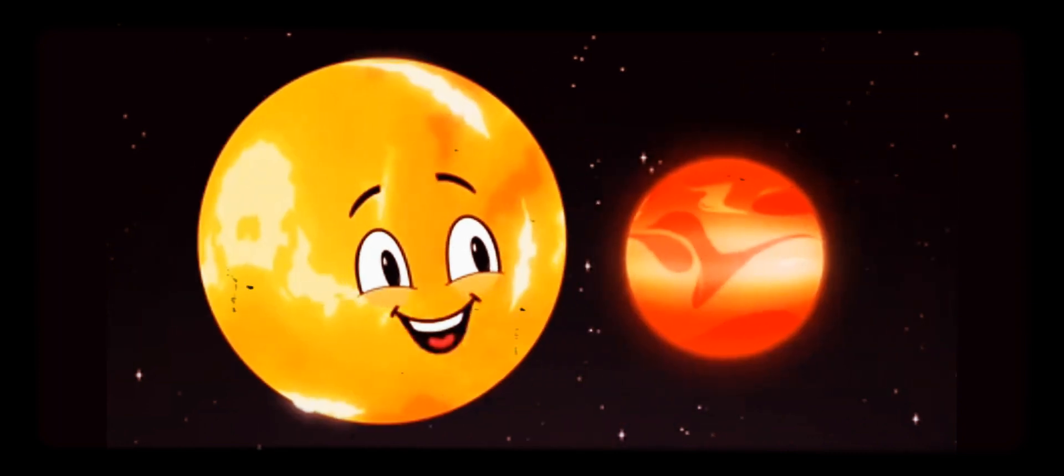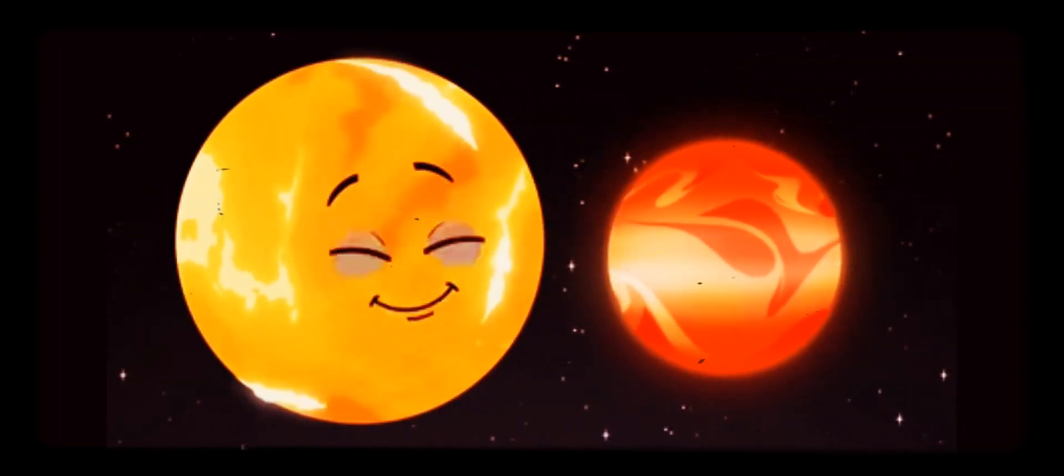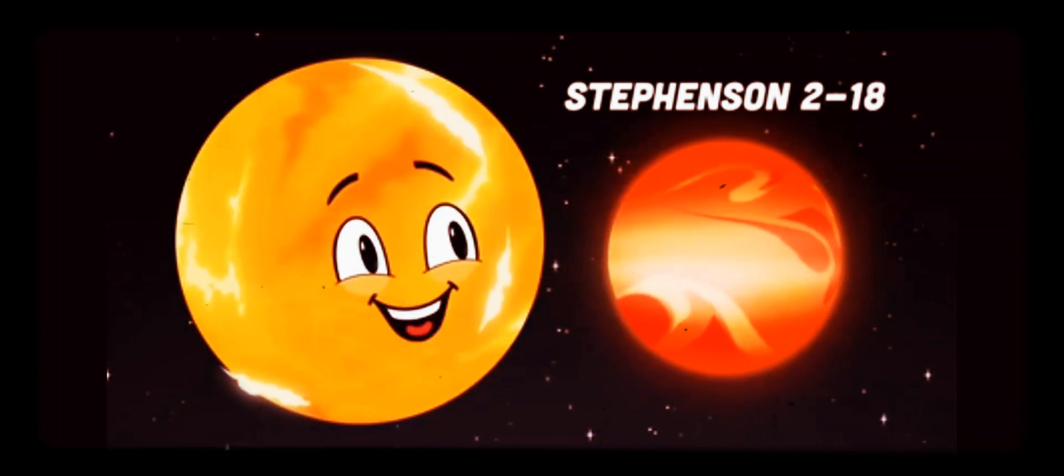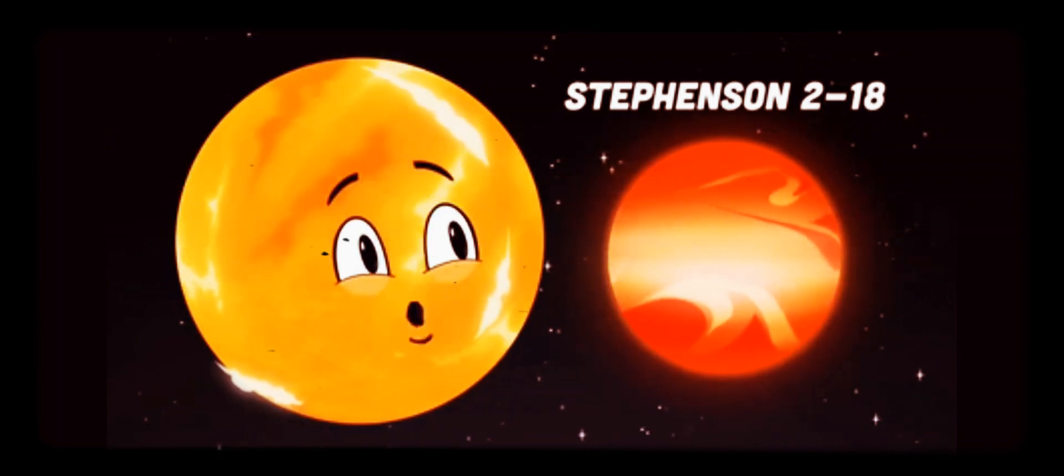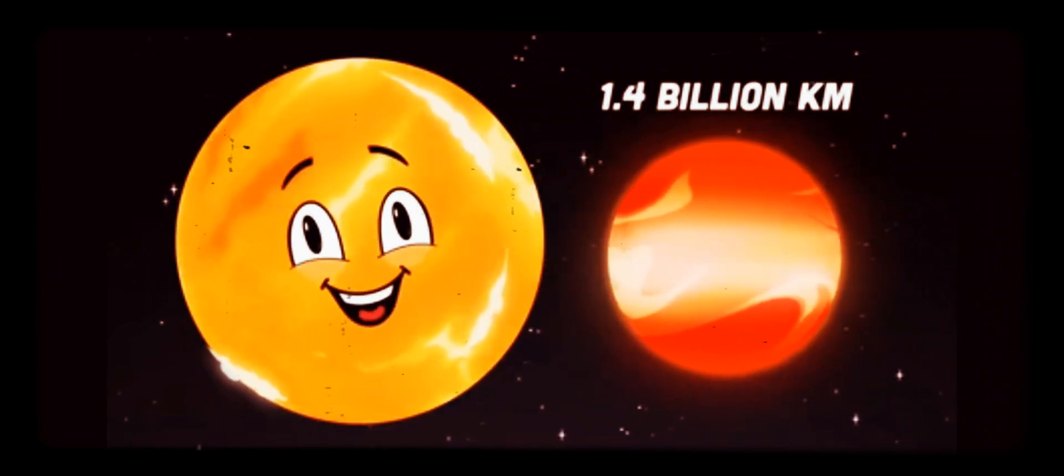This is a red supergiant or possibly a red hypergiant star. It goes by the name of Stevenson 2-18. It's the biggest by far. It has a radius in kilometers of 1.4 billion in size. As you can see, it's small compared to me in the night sky.